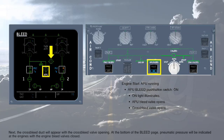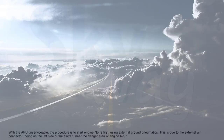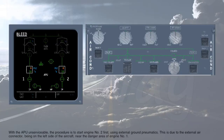Next, the cross-bleed duct will appear with the cross-bleed valve opening. At the bottom of the bleed page, pneumatic pressure will be indicated at the engines with the engine bleed valves closed. Engine start procedures will be covered in the power plant module. With the APU unserviceable, the procedure is to start engine number 2 first using external ground pneumatics. This is due to the external air connector being on the left side of the aircraft near the danger area of engine number 1.